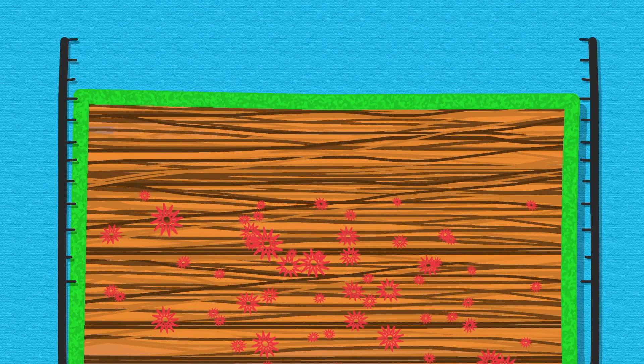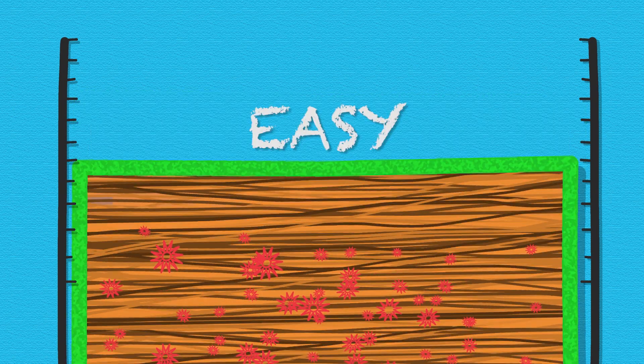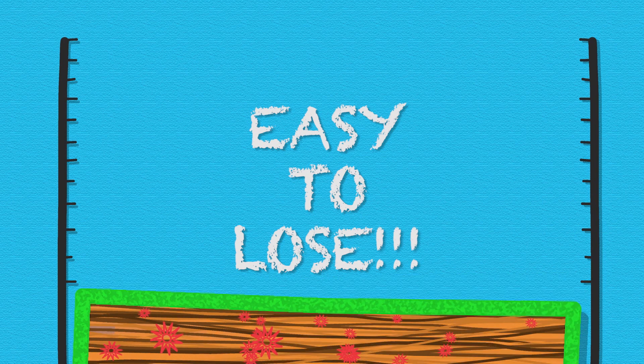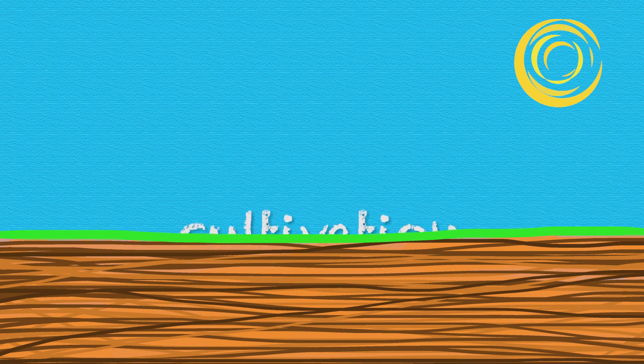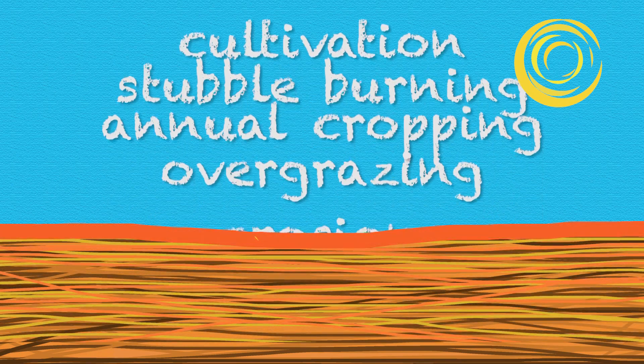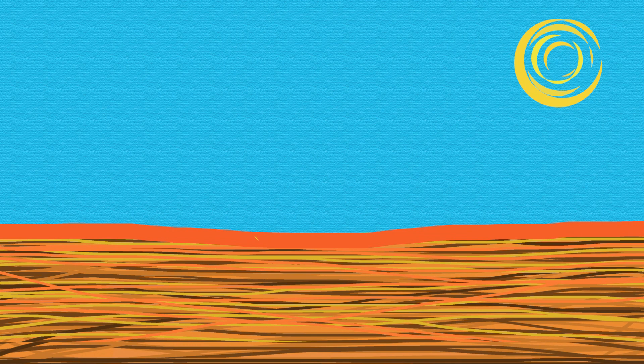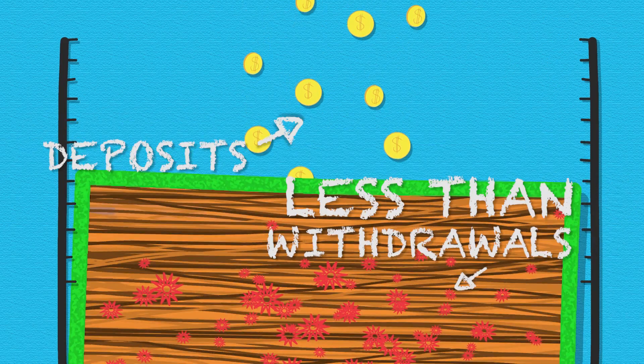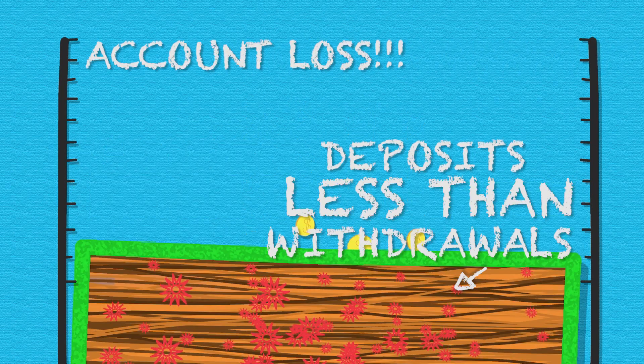Unfortunately, since the introduction of agriculture in Australia, it's been more common to be losing carbon from soils rather than increasing it, with soil carbon levels often declining from natural levels. For example, across the Australian wheat belt, it has been estimated that over 60% of soil carbon has been lost from the top 10 centimetres of soil. This is largely because little carbon is produced during the fallow period compared to what could be achieved by permanent pastures or native vegetation. Land management practices such as cultivation, stubble burning, annual cropping, overgrazing and erosion are all activities which tend to cause soil carbon loss — it's like a banking situation where our deposits are less than our withdrawals, so our balance shows a loss over time.